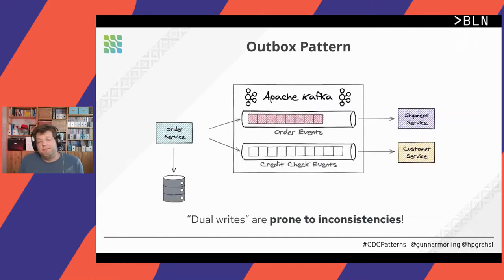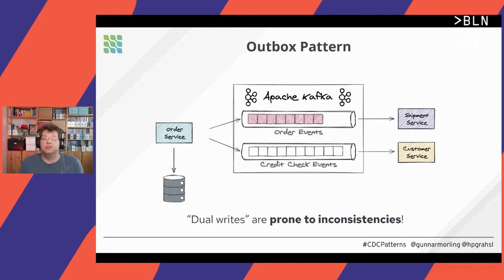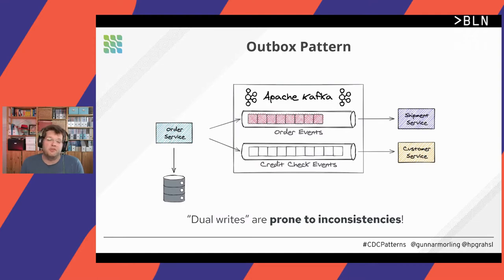The apparent approach might be a dual write: the service updates its database and simultaneously sends a message via Kafka. But dual writes are not reliable. Since those two actions don't happen within one shared transaction, it could happen that one gets applied and the other fails. We might persist a purchase order in our database but fail to notify the shipment service about it. Don't do dual writes.